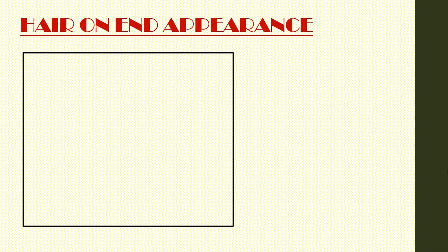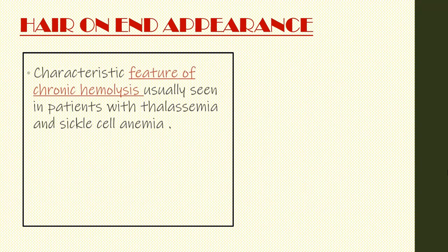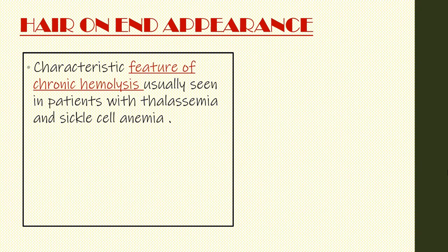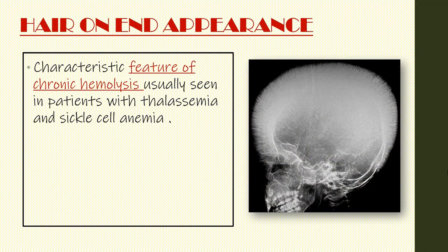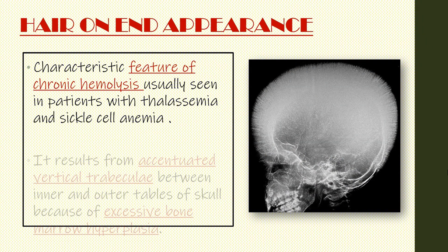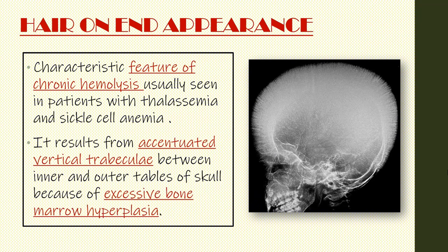The hair-on-end appearance is a characteristic feature of chronic hemolysis, usually seen in patients with thalassemia and sickle cell anemia. It results from accentuated vertical trabeculae between the inner and outer tables of the skull because of excessive bone marrow hyperplasia.